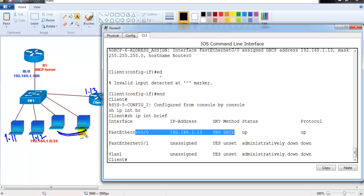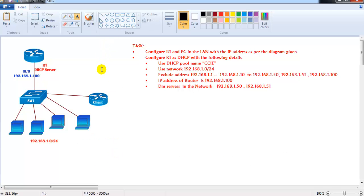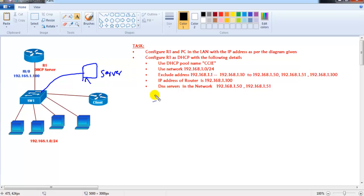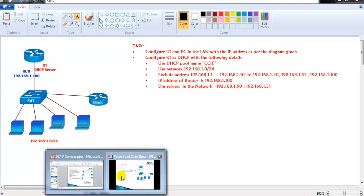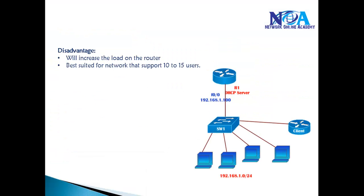Using a router as a DHCP server is applicable in small-size networks. For larger networks, you should use a separate dedicated server running Windows or Linux to handle DHCP. While Cisco routers support this feature, it is not practically recommended for large deployments because it increases load on the routers. It is best suited for networks with 10 to 15 users or a very small number of clients. For a large number of clients, an external DHCP server is recommended.